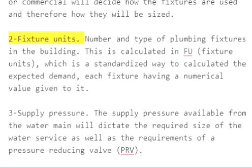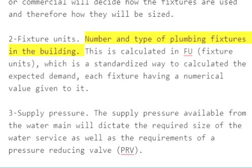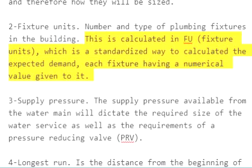2. Fixture units — the number and type of plumbing fixtures in the building. This is calculated in FU, fixture units, which is a standardized way to calculate the expected demand, each fixture having a numerical value given to it.